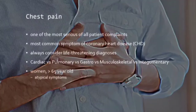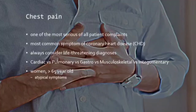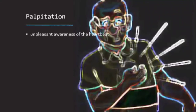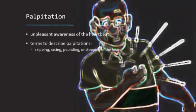Women particularly those over age 65, elderly patients, and diabetics are more likely to report atypical symptoms such as upper back, neck, or jaw pain, shortness of breath, paroxysmal nocturnal dyspnea, nausea or vomiting, and fatigue. Palpitation is another symptom of cardiac disease — an unpleasant awareness of the heartbeat. Patients may describe it as skipping, racing, pounding, or stopping of the heart. Palpitation does not necessarily indicate heart disease.